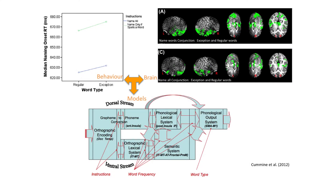We also combine analyses of behavior and brain to guide the development of computational models of cognitive processing. Here we show how manipulating instructions for reading can affect behavioral reaction time and brain activation, which informs our models in terms of when various stages of processing occur and where they are located.